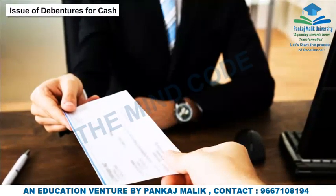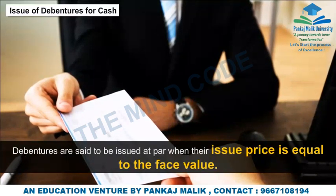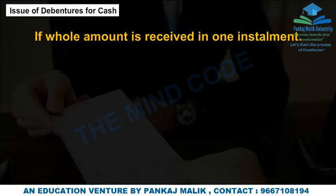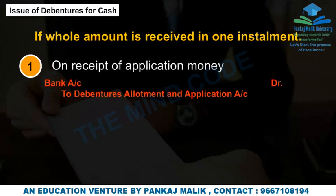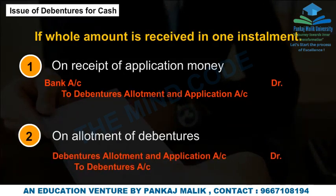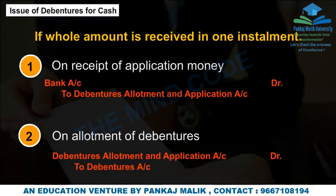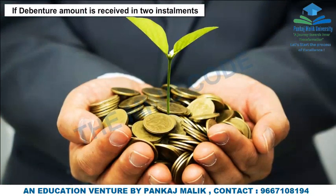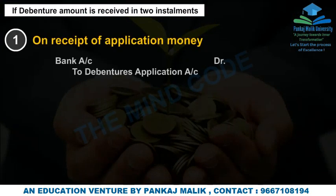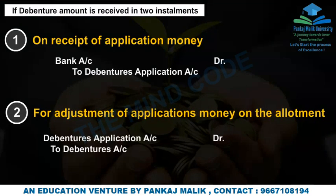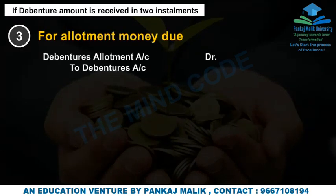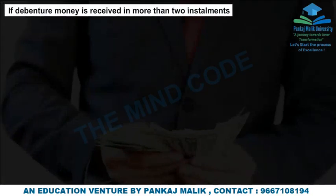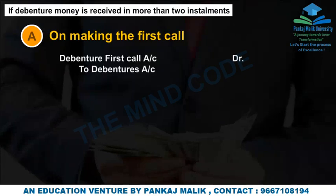Issue of Debentures for Cash — At Par: Debentures are said to be issued at par when their issue price equals the face value. If the whole amount is received in one installment, the entries are: 1. On receipt of application money; 2. On allotment of debentures. If received in two installments: 1. On receipt of application money; 2. For adjustment on allotment; 3. For allotment money due; 4. On receipt of allotment money. If received in more than two installments: A. On making the first call; B. On receipt of the first call.